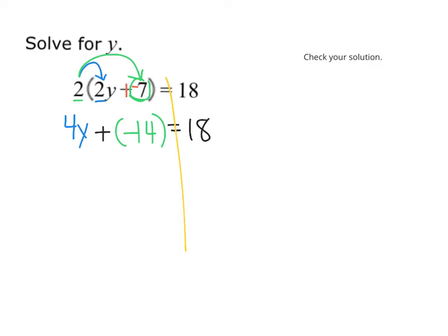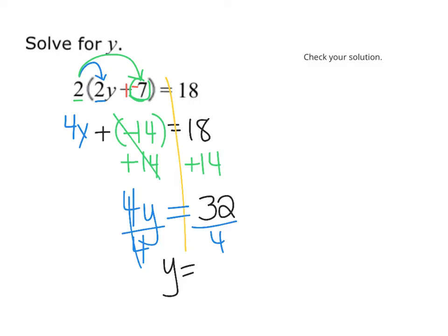So, I have my y's on one side. Now, I need to get rid of this minus 14 or plus negative 14. And to do that, I'm going to add a positive 14. Because that's going to cancel out and leave us with just 4y over here. But we know if we do it on the left, we've got to do it to the right. And that will leave us with an answer of 32. So, 4 times y equals 32. Our final step, divide by how many y's we have. But if I do it on the left, I must do it on the right. And I find out that y equals 8.